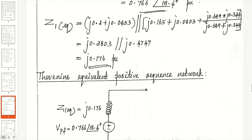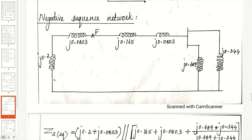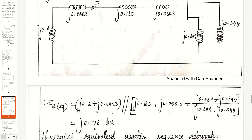With VPF in series with Z1 equivalent, draw the Thevenin's equivalent positive sequence network. For the negative sequence network, voltage sources are not shown. The network includes X2 of generator, X2 of transformer 1, X2 of transmission line, X2 of transformer 2, X2 of motor 1, and X2 of motor 2. The right-hand side of the fault point has the parallel combination of the two motor reactances in series with the transformer and line reactances. Z2 equivalent = J0.176 per unit.